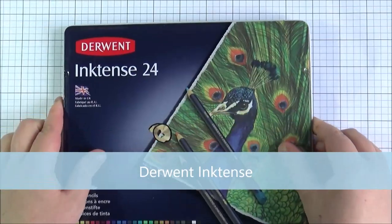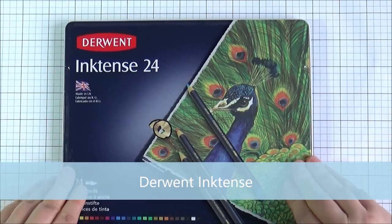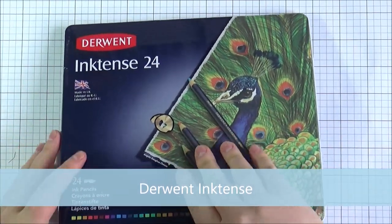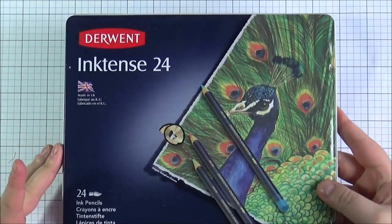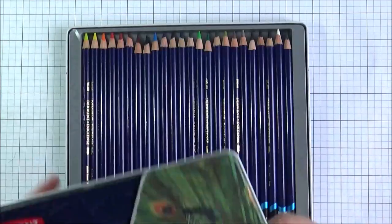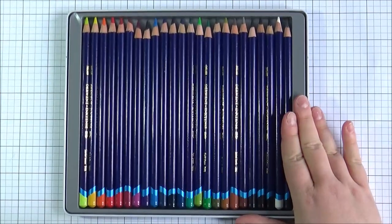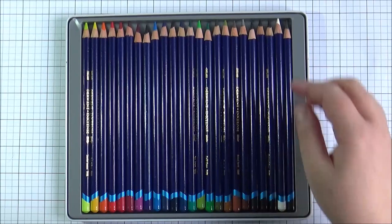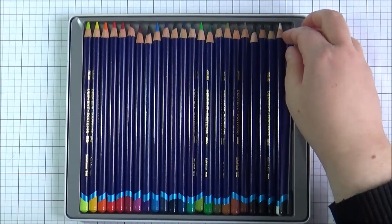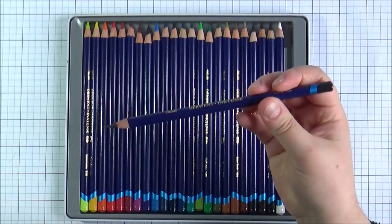Next up is the Derwent Inktense pencils. These are actually not a watercolour pencil but they are an ink based pencil but you use them like you would a watercolour pencil so you can obviously colour in your image straight directly onto the paper and then you can use some water to blend it out.